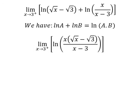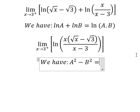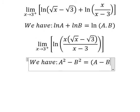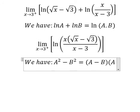Next, we have identity. That's about A square minus B square equals to A minus B multiplied by A plus B.